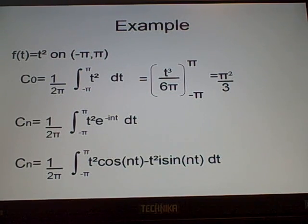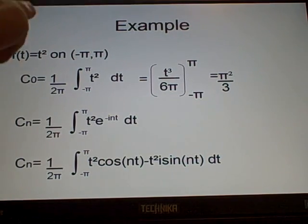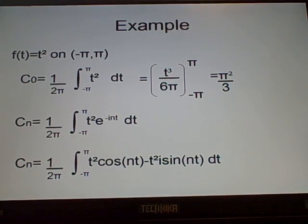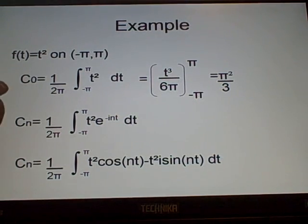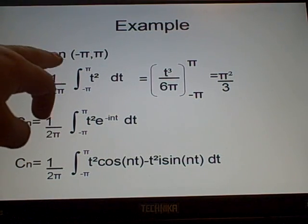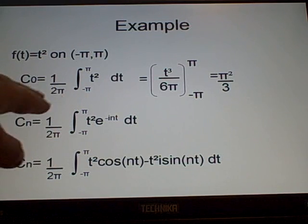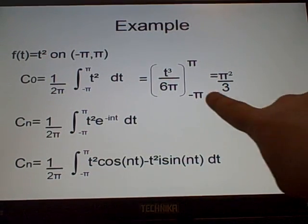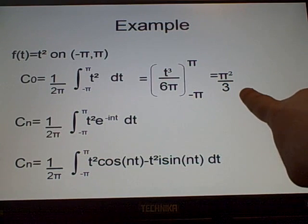Right, now, our example. Our function is t squared, and it's on the minus pi to pi. Now, the first thing we should normally do is get our c naught, which is, remember, 1 over 2 pi times integral from minus pi to pi of t squared times e to the 0, which is 1, dt, which integrate this, and we get pi squared over 3.